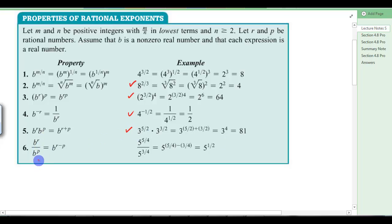And when you divide like bases, you can subtract the exponents. So same thing. 5 to the 5 fourths minus 3 fourths gives you 5 to the 2 fourths, which is 5 to the 1 half. And anytime you see something to the 1 half, it's the same thing as the square root of that number.